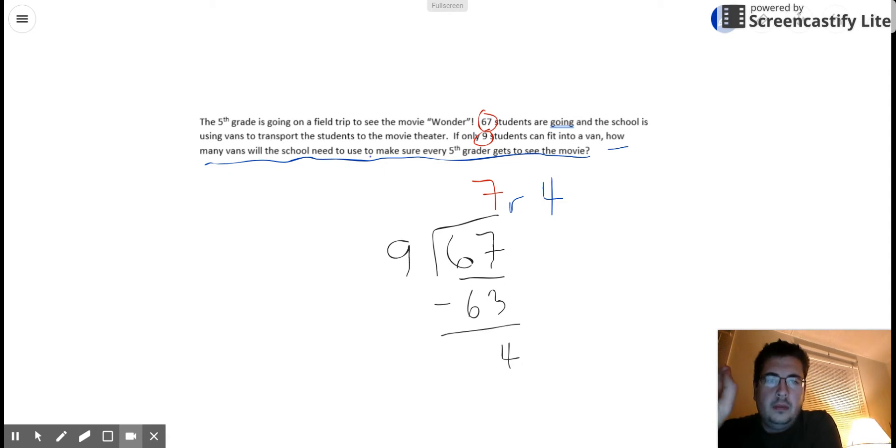So we have 7 remainder 4, but does that really answer the question, how many vans will the school need to use to make sure every fifth grader gets to see the movie? Because we don't want to lose sight of the real question here. We did the math. We got an answer, which is great. But we don't want to lose sight of the actual question.